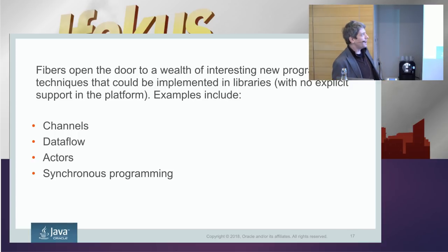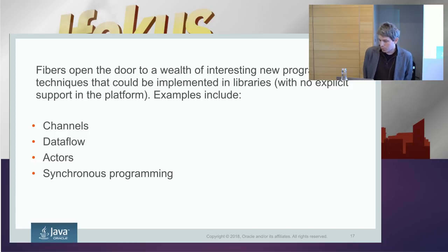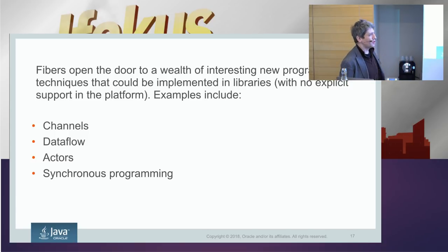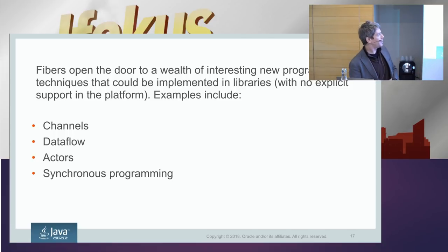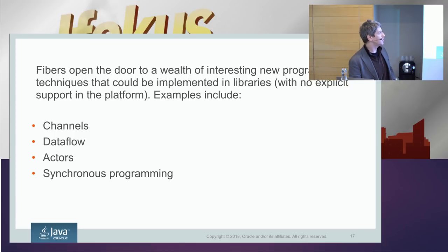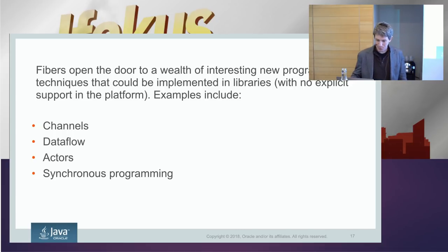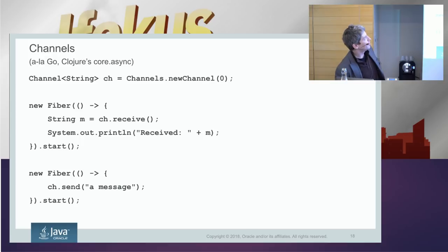Once we have fibers, we can support new kinds of simple and interesting programming styles — for example, channels like in Go. Channels are basically blocking queues with interesting operations like select, so you can block on multiple queues at once. Dataflow — it's like spreadsheet programming. Actors like in Erlang. And something very interesting called synchronous programming, which may be the future, but that's a whole different talk.